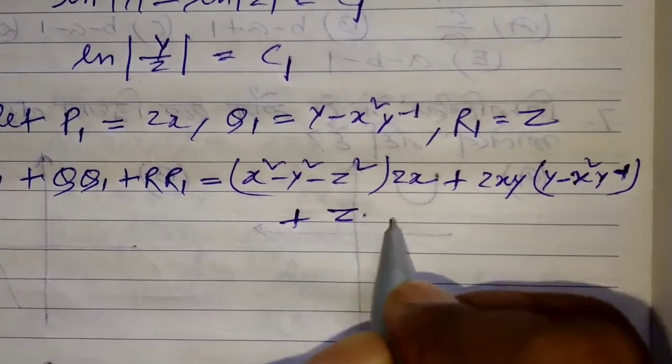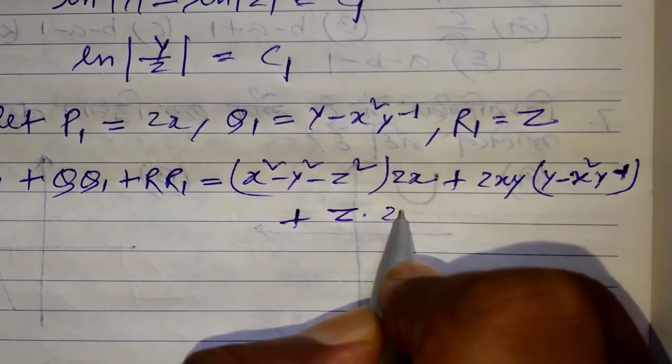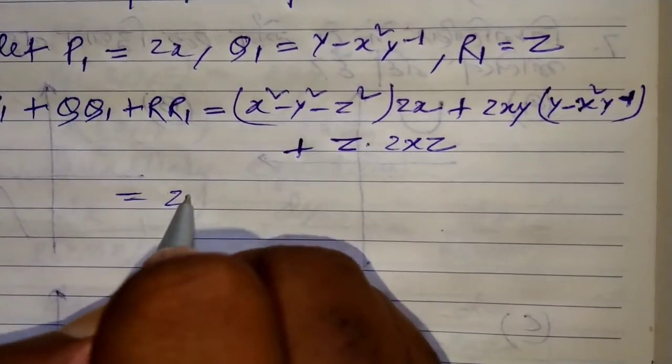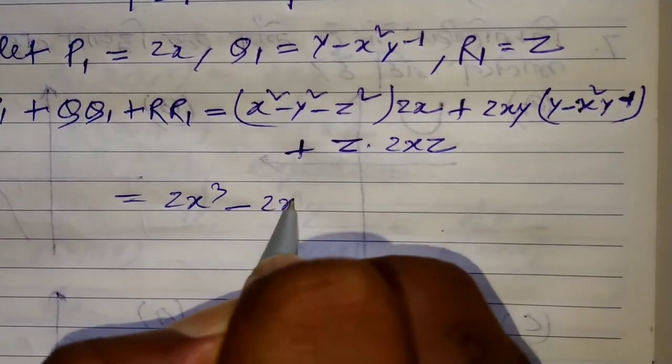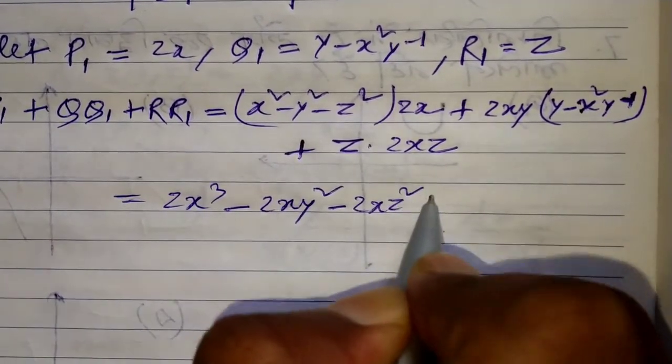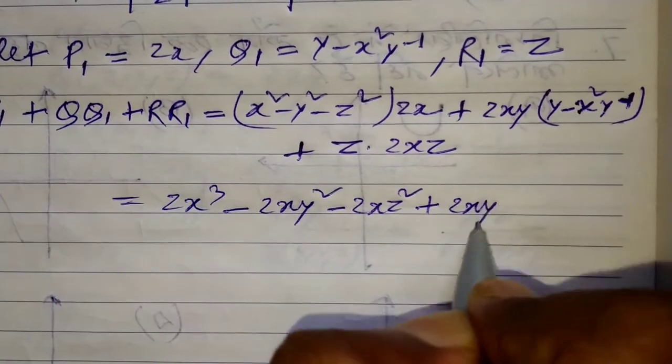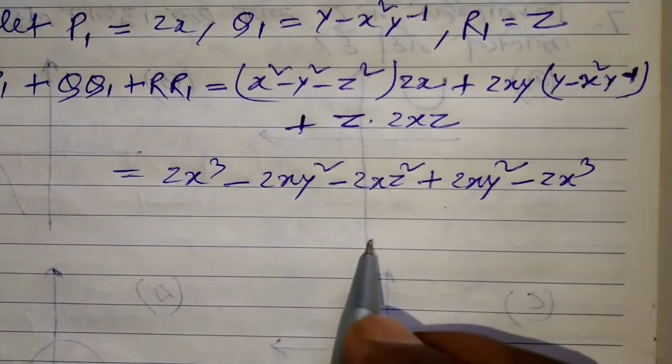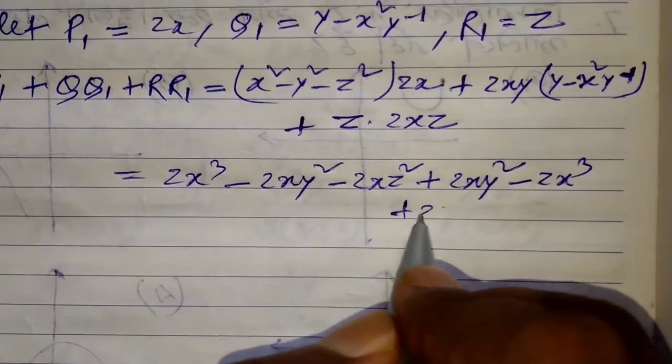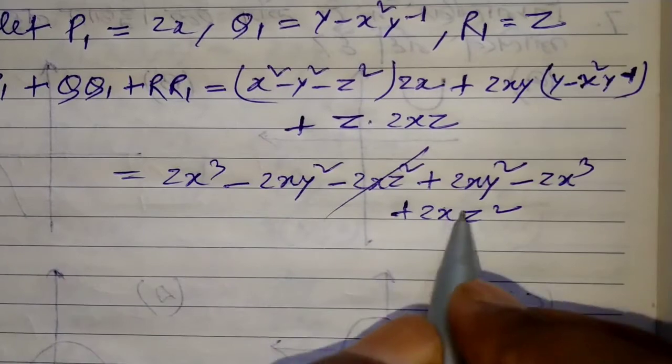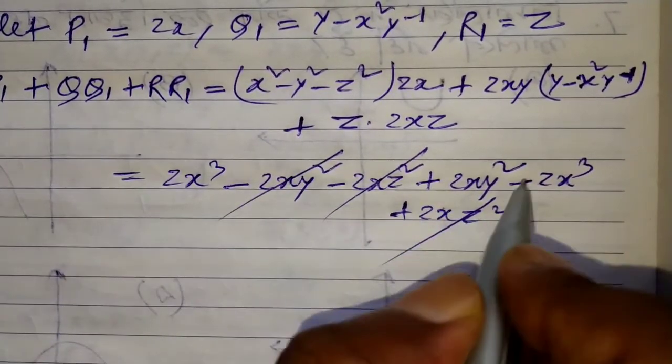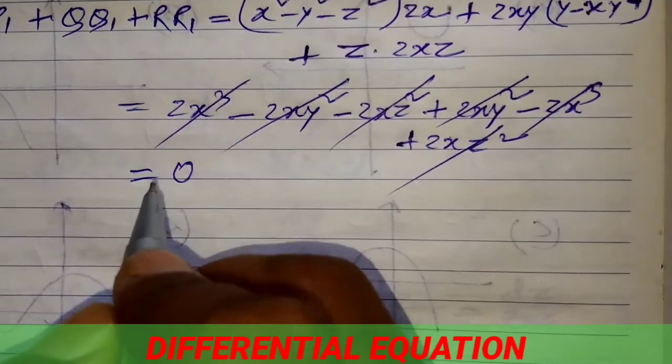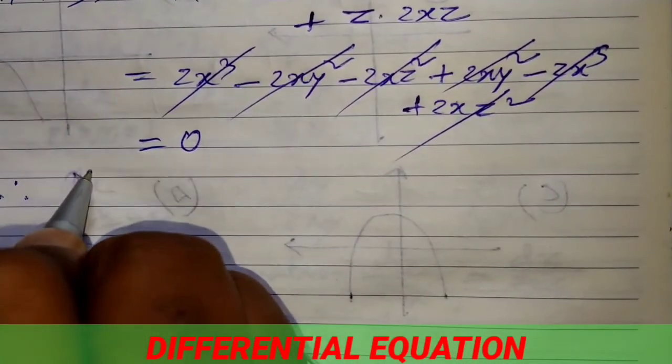This equals 2x³ - 2xy² - 2xz² + 2xy² - 2x³ + 2xz². The 2x³ terms cancel, -2xy² and +2xy² cancel, -2xz² and +2xz² cancel. This is equal to 0.